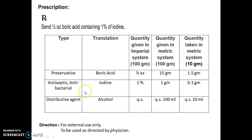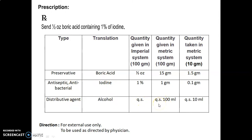Alcohol is used as a distributive agent to dissolve or solubilize the iodine. Quantity given in imperial is quantity sufficient. Taken quantity for preparing 100 grams is quantity sufficient — approximately 100 ml required on average. Taken quantity in metric is quantity sufficient to prepare up to 10 ml or 10 grams. Direction: for external use only, to be used as directed by physician.